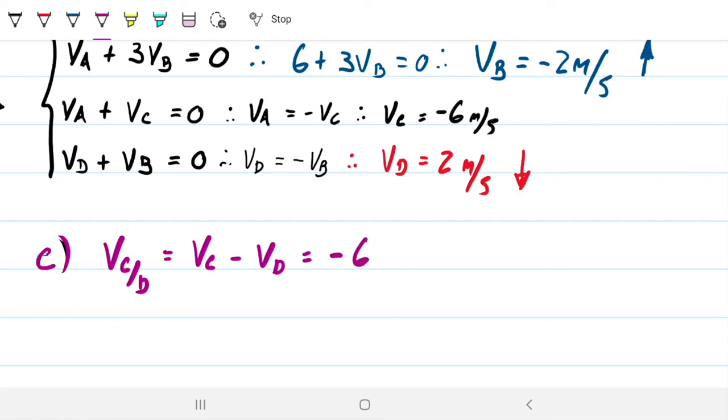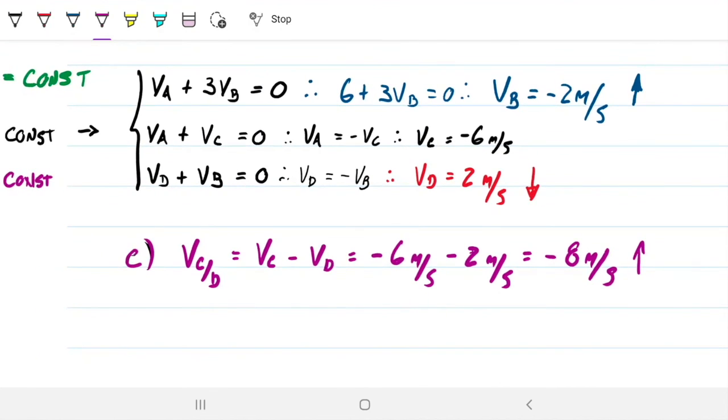We have everything we need. The velocity of C is minus 6 meters per second. And the velocity of D is 2, so it's minus 2 meters per second. So that is negative 8 meters per second. So from C's perspective, it's moving at 8 meters per second upwards in relationship to D, right? From our perspective, that we're standing still, it's just moving 6 meters per second upwards.